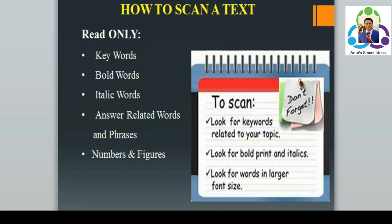Number four: answers related to words — there are certain words related to your answer, so you can quickly locate those words and phrases to find specific information. Number five: numbers and figures. To scan: look for keywords related to your topic — جو آپ کے topic سے related الفاظ ہوں صرف انہیں دیکھیں۔ Look for bold print and italics — وہ الفاظ جو bold یا italics میں ہوں انہیں غور سے دیکھیں۔ Look for words in larger font size — آم font size سے بڑے سائز کے الفاظ کو بھی غور سے دیکھیں۔